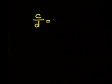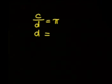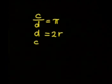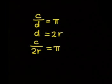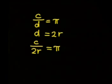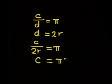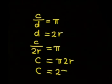So we are ready to write the relationship between the circumference and the diameter of the circle in this way: the circumference divided by the diameter is equal to pi. Since the diameter is equal to 2 times the radius, this means that C divided by 2r is equal to pi. To get a formula for the circumference, we multiply both sides of the equation by 2r, which gives us C is equal to pi times 2r, or C is equal to 2πr.